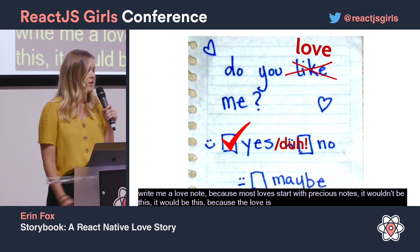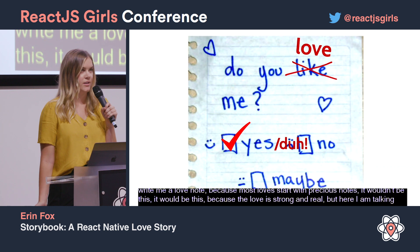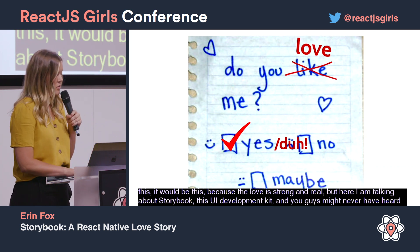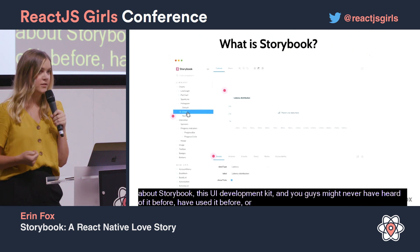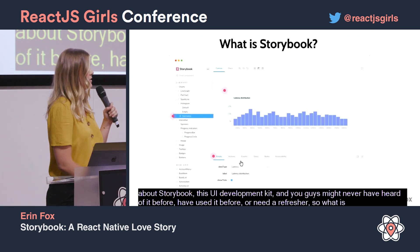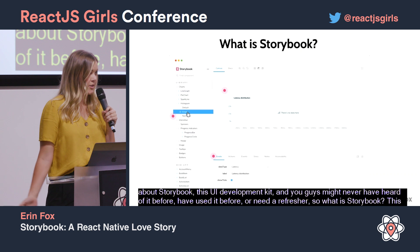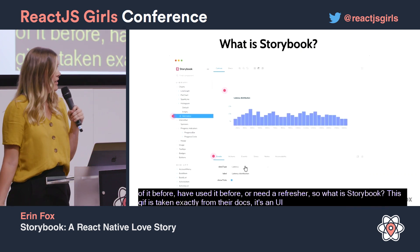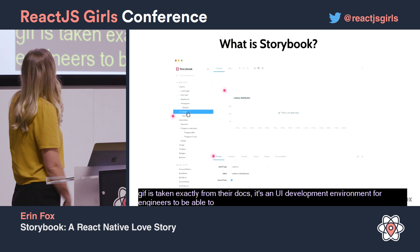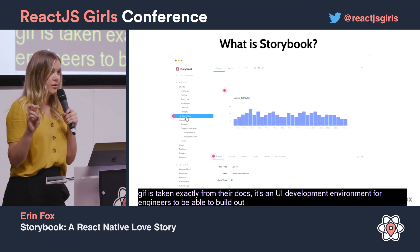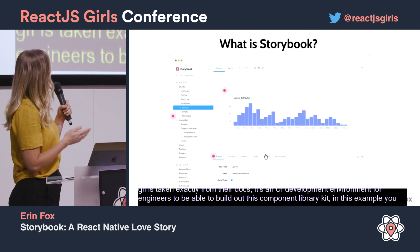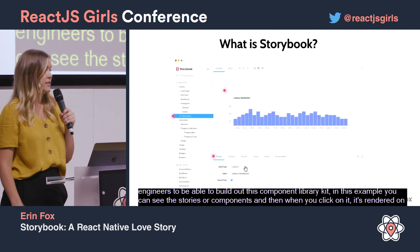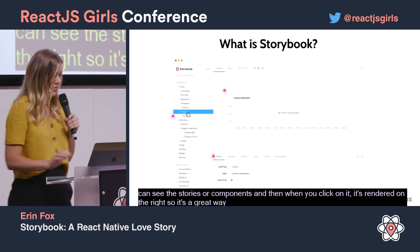So what is Storybook? This GIF is taken directly from their docs. Storybook is a UI development environment for engineers to build out a component library kit. In this example you can see all the stories or components on the side, and when you click on one it's rendered on the right. It's a really great way to organize and see all of your components all at once.